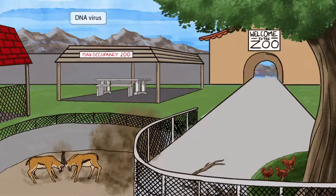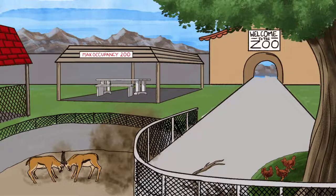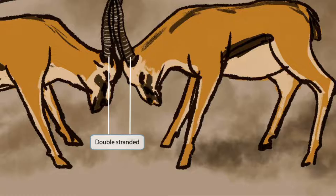Did you notice the color schematic of the background? We've made the sky blue to help you remember that this is a DNA virus. Now look at the antlers of those two animals fighting each other. If we zoom up, you can see that they're lined up right next to each other in a somewhat parallel fashion, and this should help you remember that VZV is double-stranded.